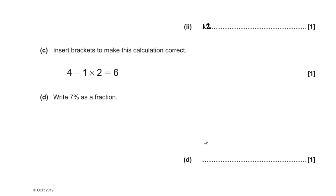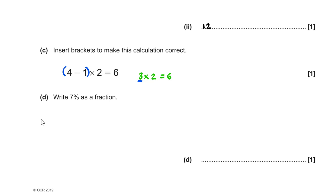For part C, we have to insert brackets to make 4 take away 1 times 2 equals 6 correct. We know 3 times 2 gives us 6, and 4 take away 1 is 3, so the brackets go around (4 − 1). For part D, we have to write 7% as a fraction. Percentage means out of 100, so we have 7 over 100.